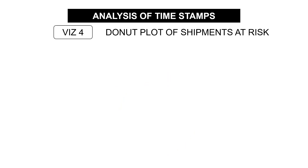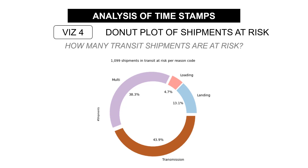And finally, you can build a bar plot of transit shipments at risk — these are open shipments that have already missed one target lead time. How many shipments are at risk and why? This is a day-to-day management visual to help coordinators push operations to meet the target lead time. For instance, if you miss the cut-off time for loading, you can ask the transportation team to push to catch up during landing, customs clearance, or final delivery.